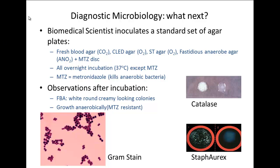There are various different types of agar that can be used: fresh blood agar, CLED agar, ST agar, and fastidious anaerobic agar. These different agars allow you to grow different organisms, and some are selective agars that only grow certain organisms. In brackets we have the atmosphere in which the agar plates are incubated — some in carbon dioxide, some in normal air (oxygen), and some anaerobic, in the absence of air.